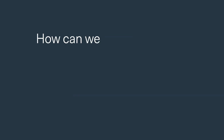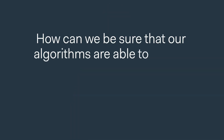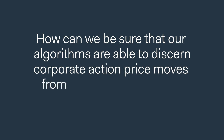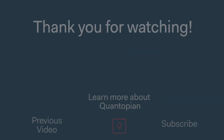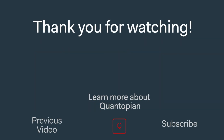We have one question left to answer: if some of the corporate actions described in our first two videos can dramatically alter the price of a stock, how can we be sure our algorithms can discern these price moves from actual price changes driven by our research data? We will cover all of this and more in the last video of this series. To be notified when we make a new video, subscribe to our channel and hit the notification bell. Thank you for watching.